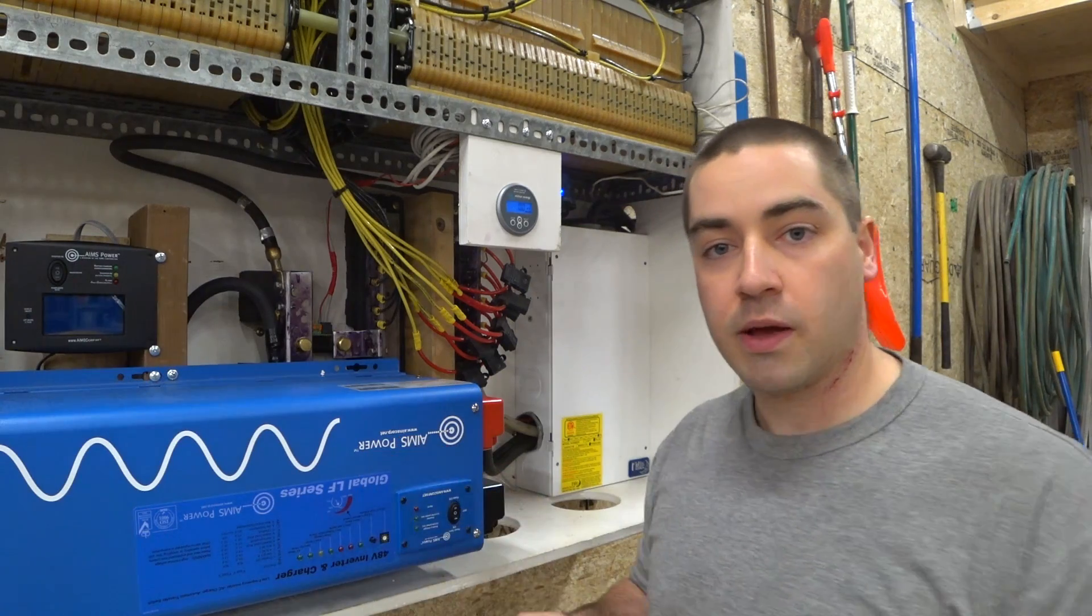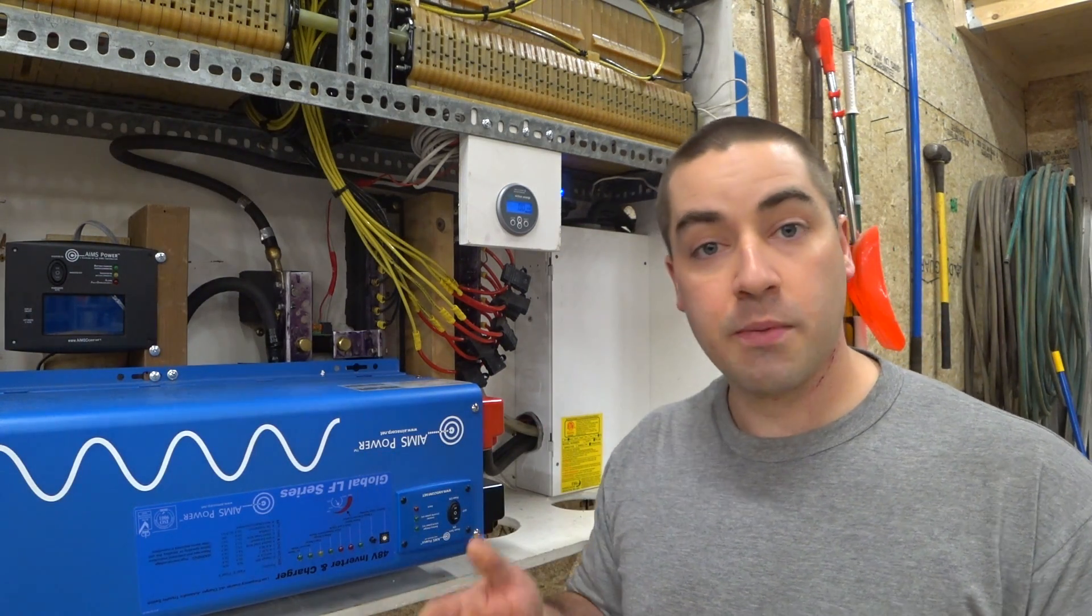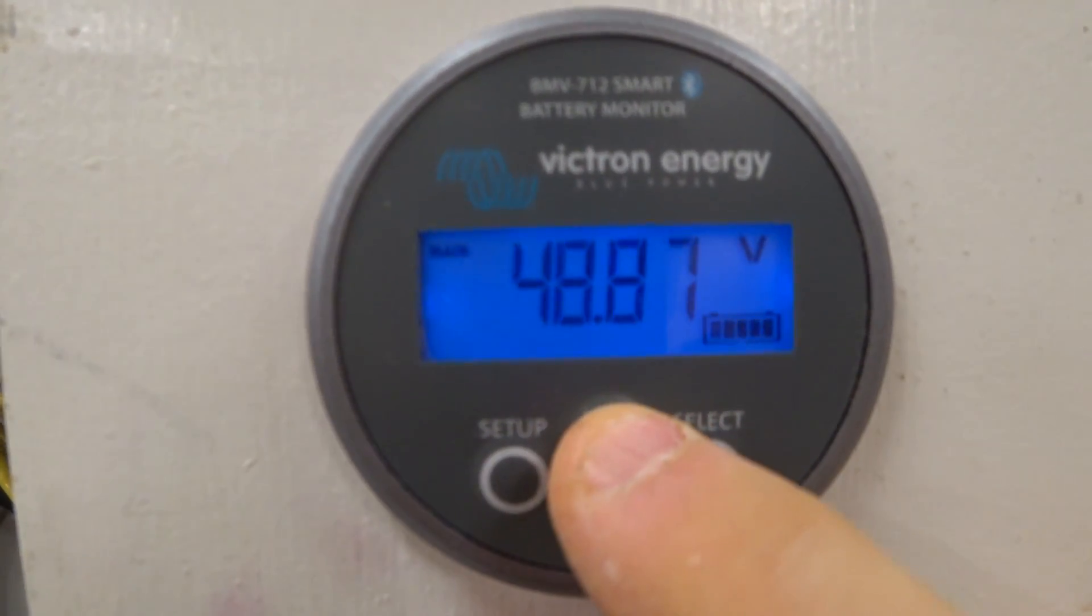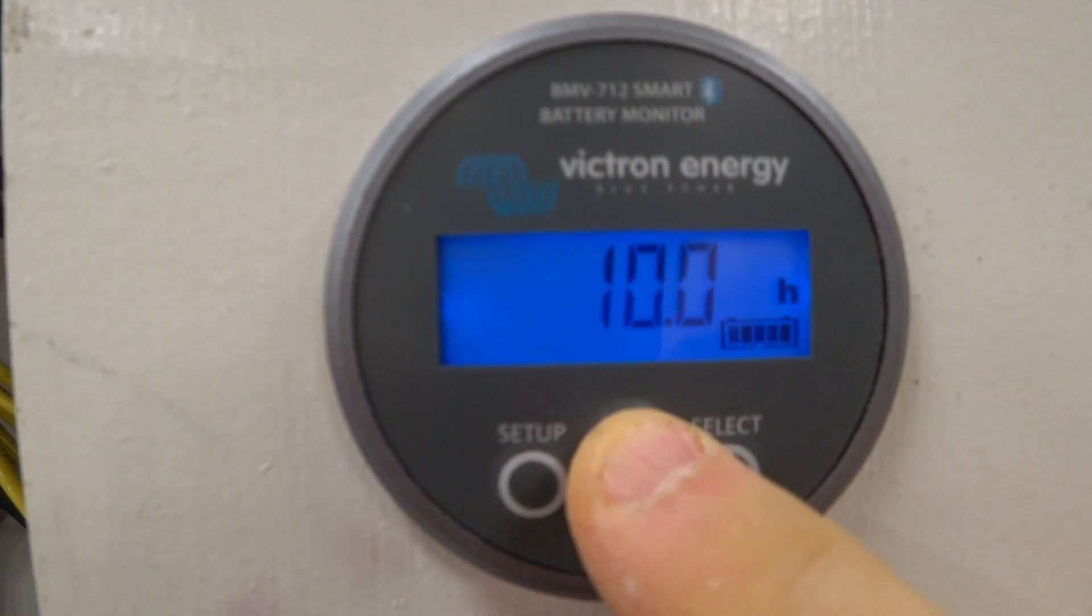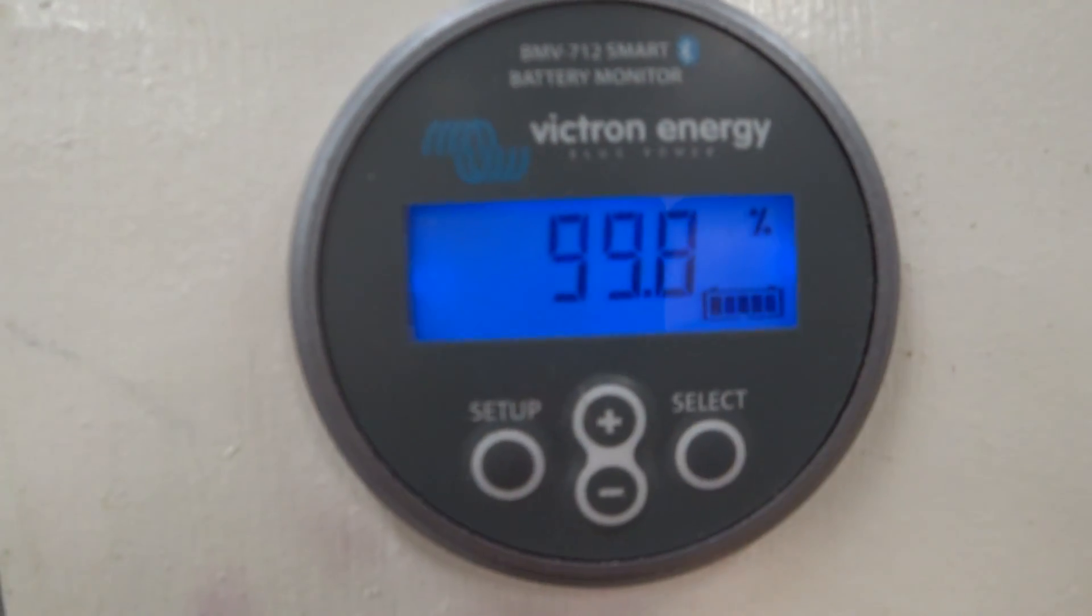I'm going to turn on the inverter. I'm going to go inside. I'm going to throw the transfer switch. We'll be able to plug this in and put a load on it. So right away, that voltage dropped quite a bit. So we're a little bit lower than 100%.